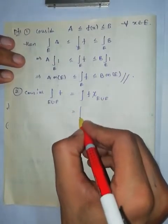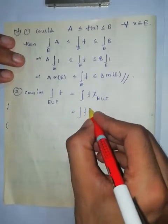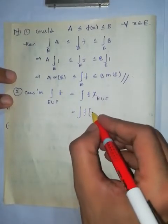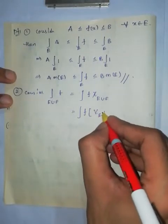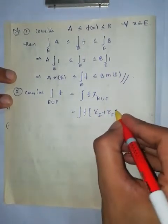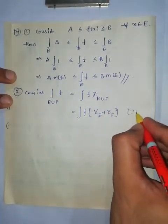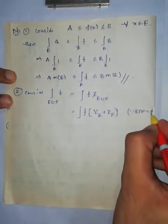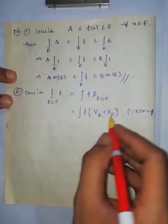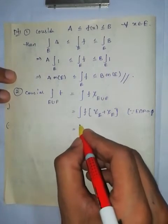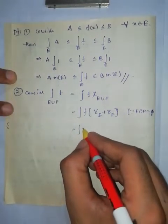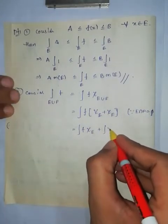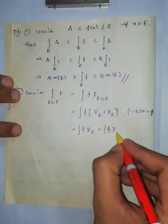Which is equal to the Lebesgue integral of f times chi_{E union F}. As already proved in the first unit, chi_{E union F} can be written as chi_E plus chi_F, since E and F are pairwise disjoint. This expression can then be written as the Lebesgue integral of f·chi_E plus the Lebesgue integral of f·chi_F.